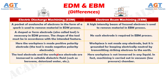Number 4: In Electric Discharge Machining, the tool electrode and the workpiece electrode are immersed in a suitable dielectric fluid such as kerosene, deionized water, etc., whereas in Electron Beam Machining the workpiece is not immersed in any liquid. In fact, machining is carried out in a vacuum low pressure chamber.